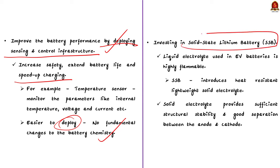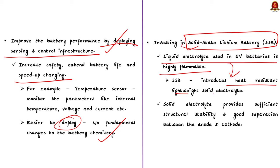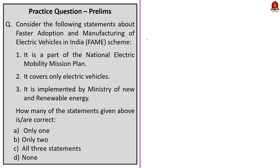Solid-state batteries seek to fix two common drawbacks of prevalent batteries. The liquid electrolyte used in EV batteries is highly flammable, but the SSB replaces this with a heat-resistant, lightweight solid electrolyte. Apart from this, the solid electrolyte in the SSB provides sufficient structural stability and good separation between the cathode and the anode. All these steps can significantly reduce the weight of the battery while also increasing charging speed. With these steps, we can effectively harness the potential of the EV market in India and support sustainable development.